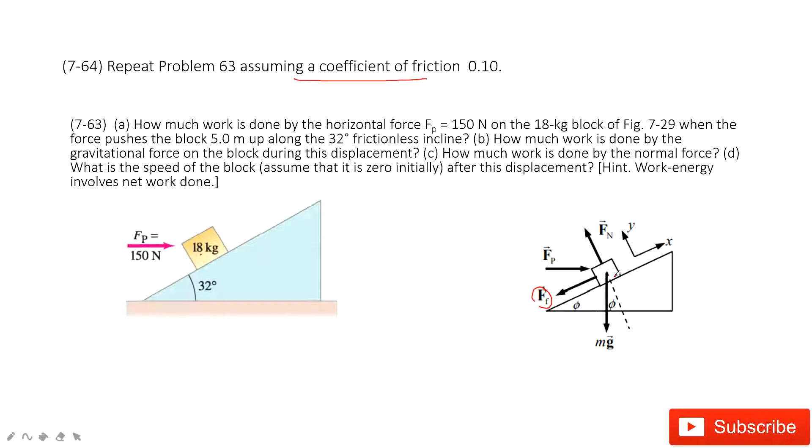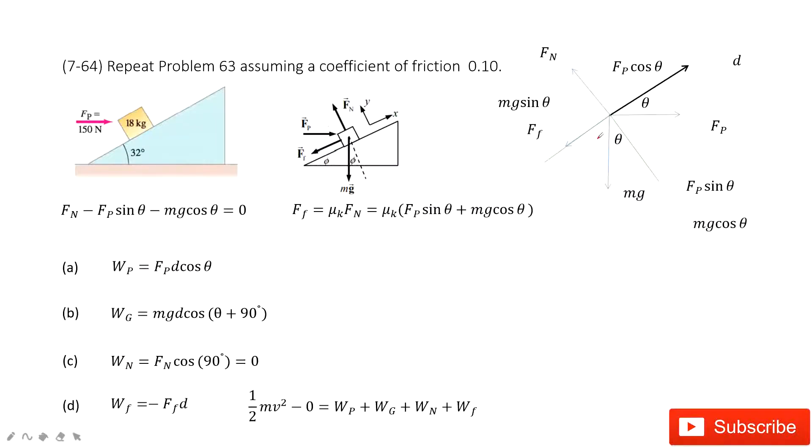If we consider the forces acting on the object: first one is gravity, normal force, force by the person, and the friction. It looks like we need to find the friction first because we need to find the work. So how can we do that?